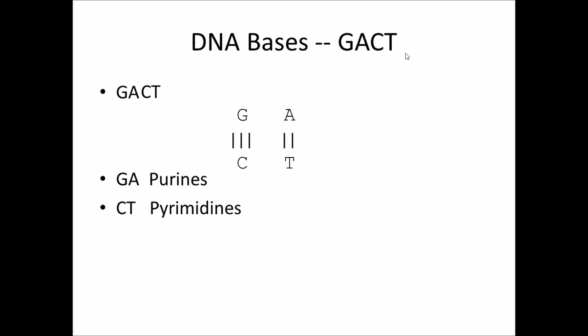The way I remember the DNA bases is with the mnemonic GACT. I order them G-A-C-T — lots of different people order them in different ways, just whatever is easiest to remember. I like GACT because I can pronounce it, and it sounds kind of goofy, which helps with memorization. Conveniently, the first two are the purines and the second two are the pyrimidines. The first purine G base pairs with the first pyrimidine C, and A base pairs with T. There are three hydrogen bonds between G and C, and two between A and T. To remember that purines come first: the letter U comes before Y in the alphabet, so G-A comes before C-T, and purine comes before pyrimidine in the alphabet.